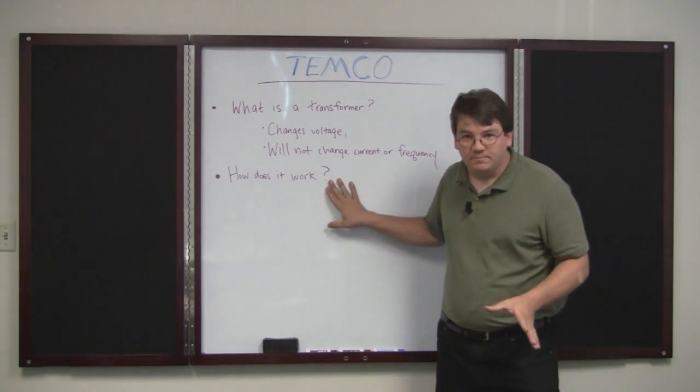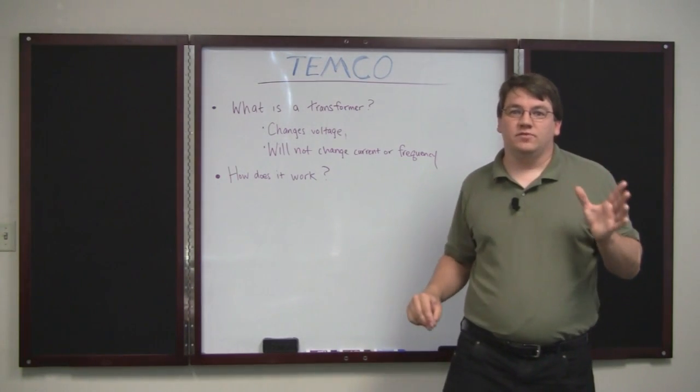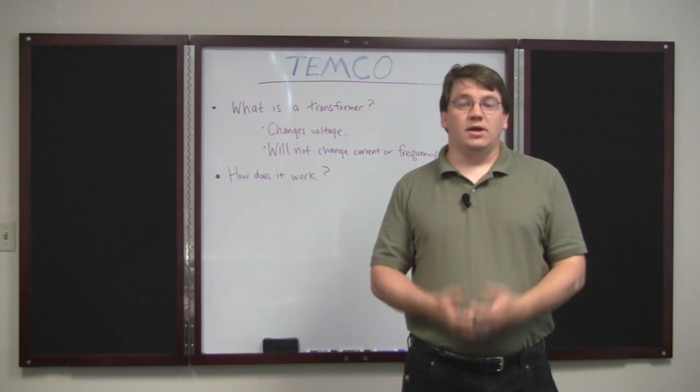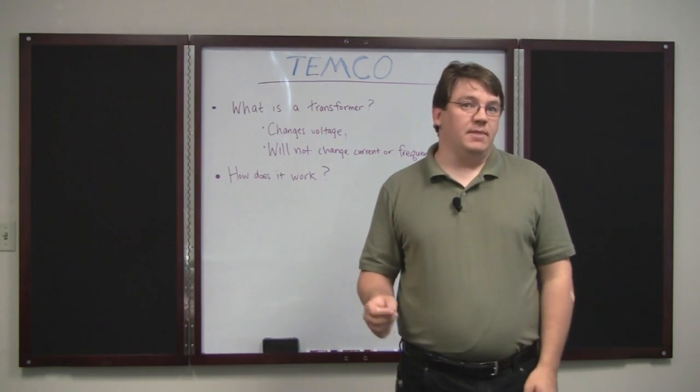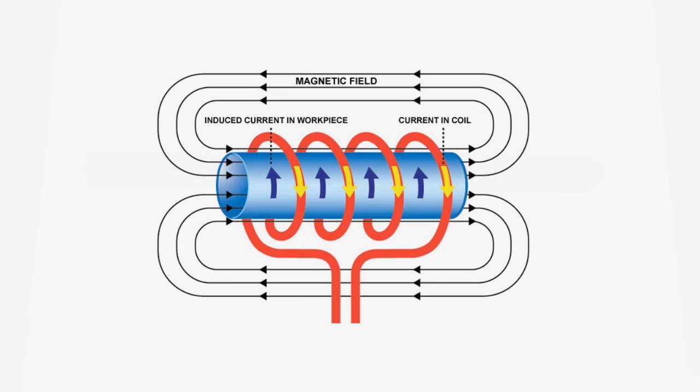How does it work? Well, to explain how a transformer works, I've got to explain to you a couple of the basics of electricity and magnetism and how the two interact. First of all, when you pass electrical current through a conductor, it develops a magnetic field around the conductor.